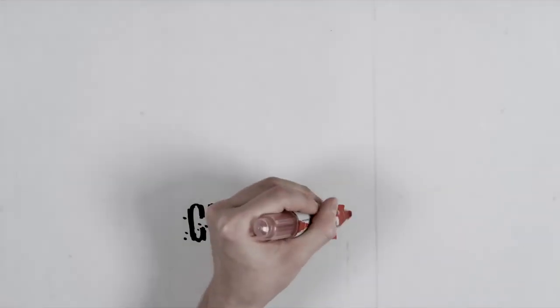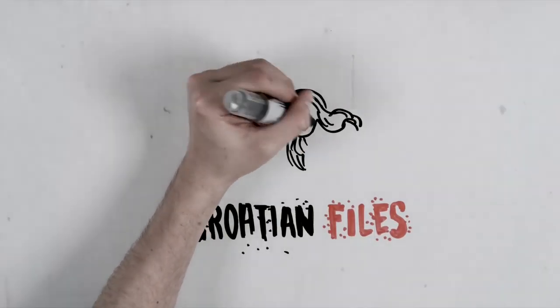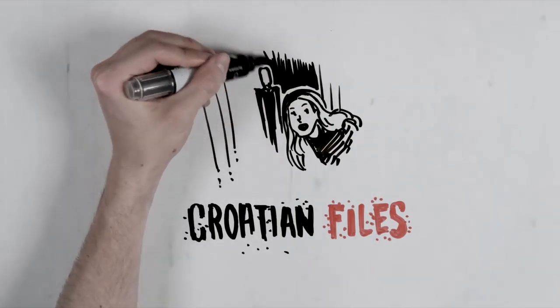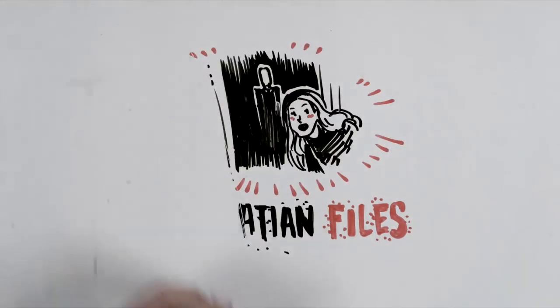Croatian Files is the first Spanish web series related to Slenderman. Two Erasmus students in Croatia find an abandoned hard drive and decide to create a YouTube channel to upload the videos they find in it. Most of the files were corrupted. Something was haunting the former owners.